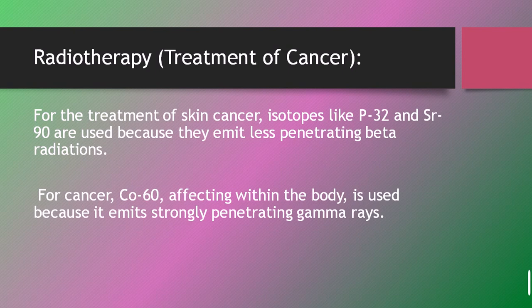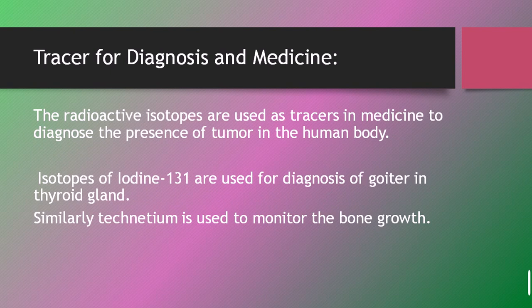For deeper cancer treatment, gamma radiations are used. Cobalt-60 is the isotope used for this purpose because gamma rays are strongly penetrating radiations. They are focused on the area where the cancerous cells are present, and the gamma rays penetrate and destroy the cancerous cells from that region.